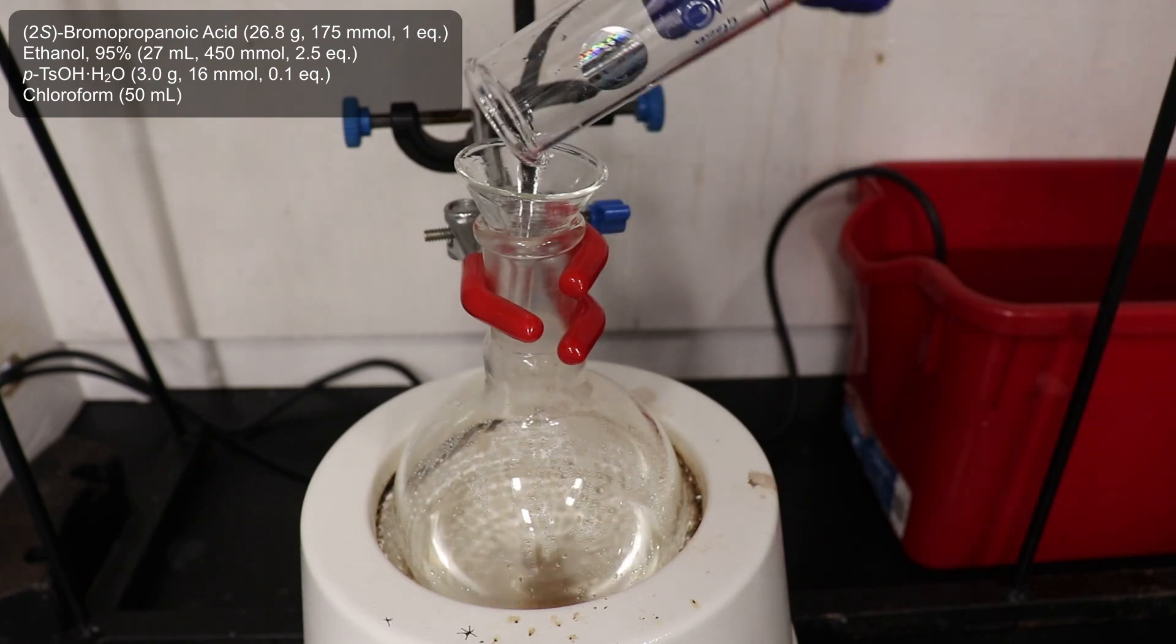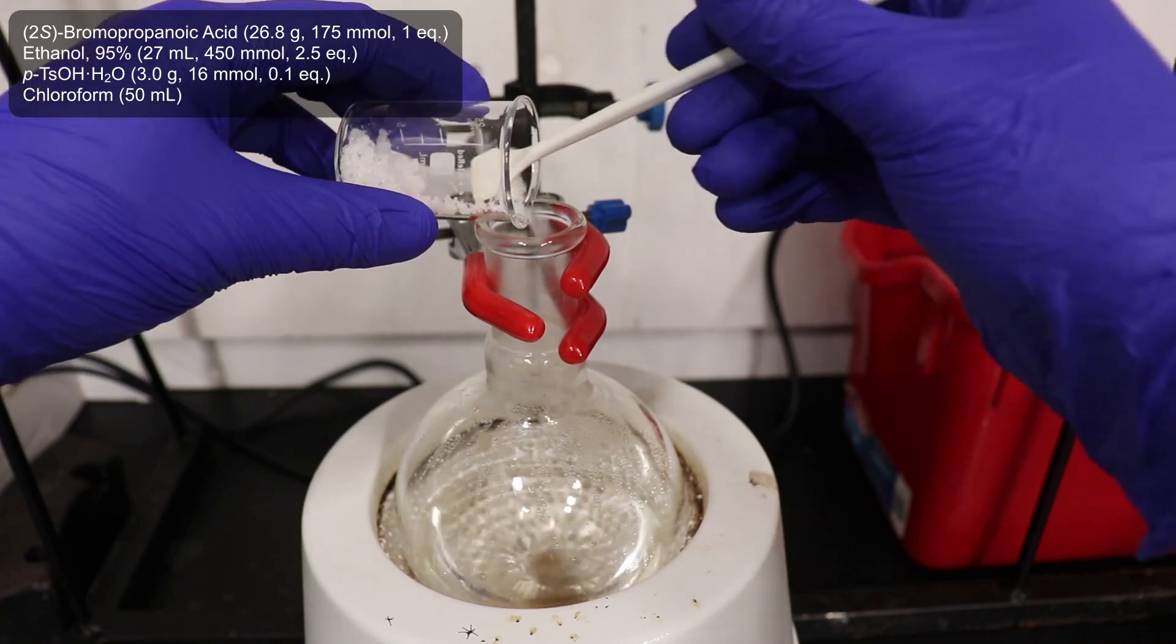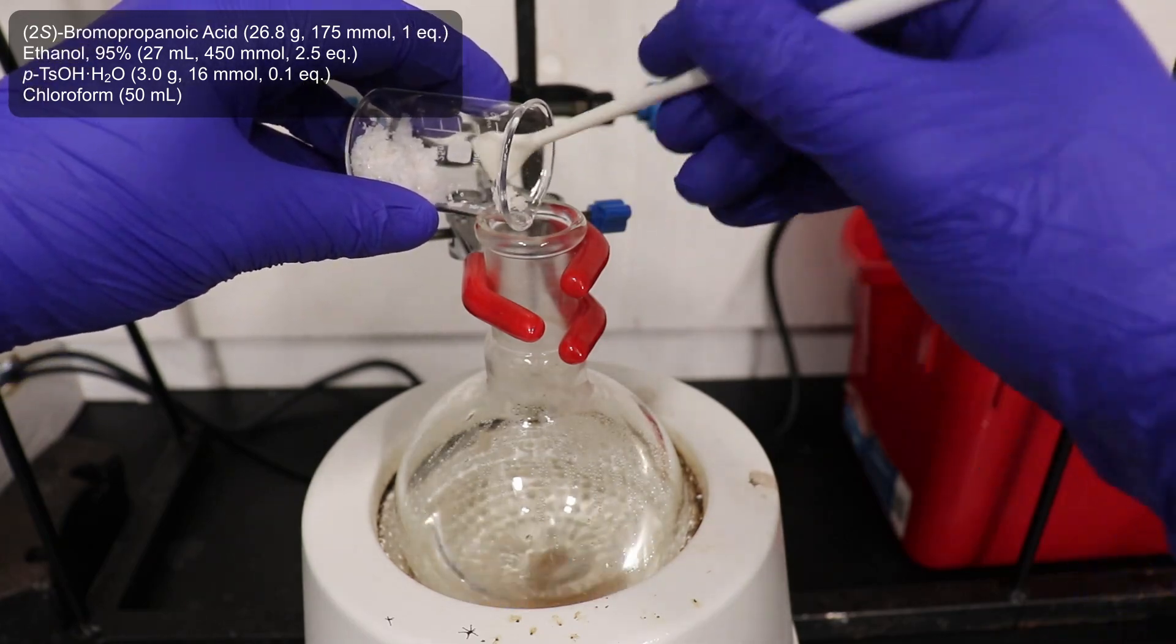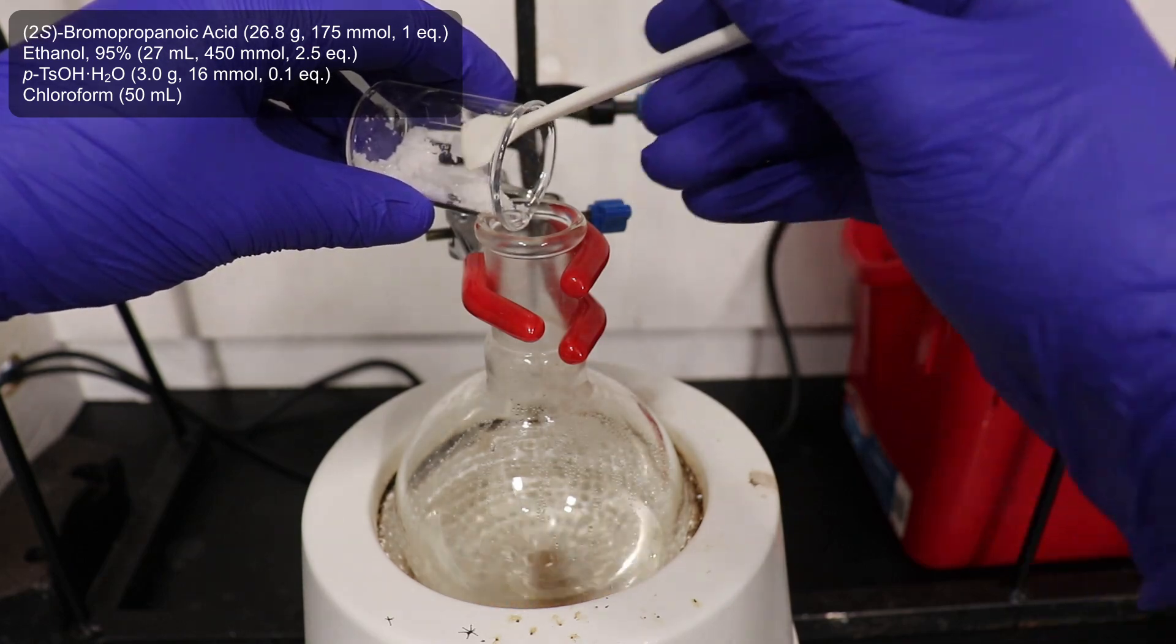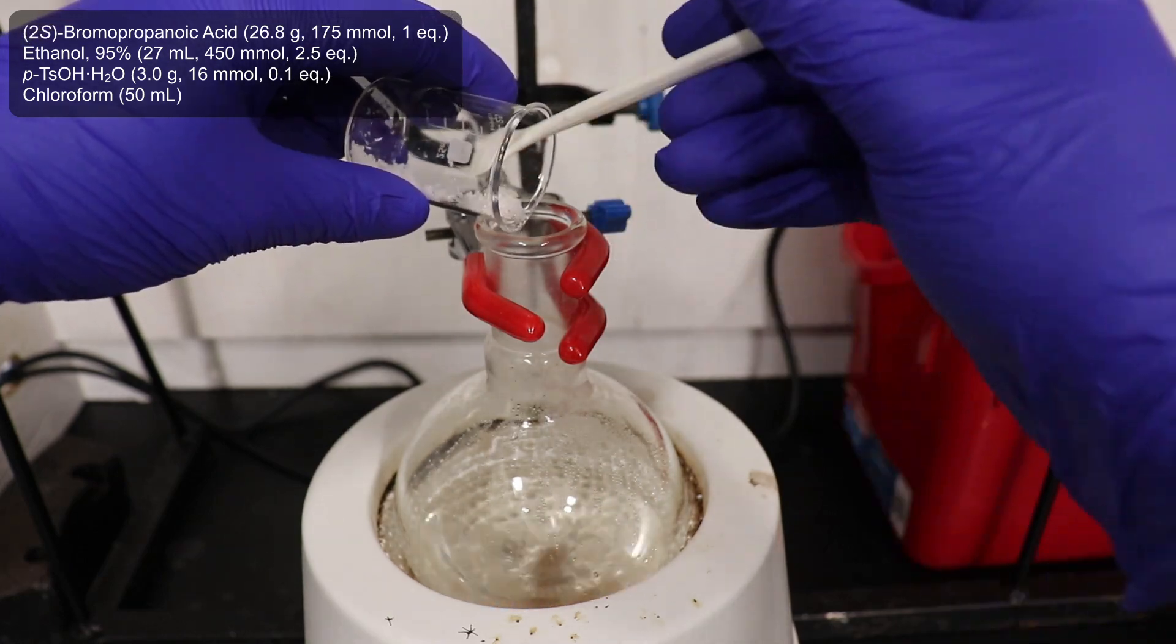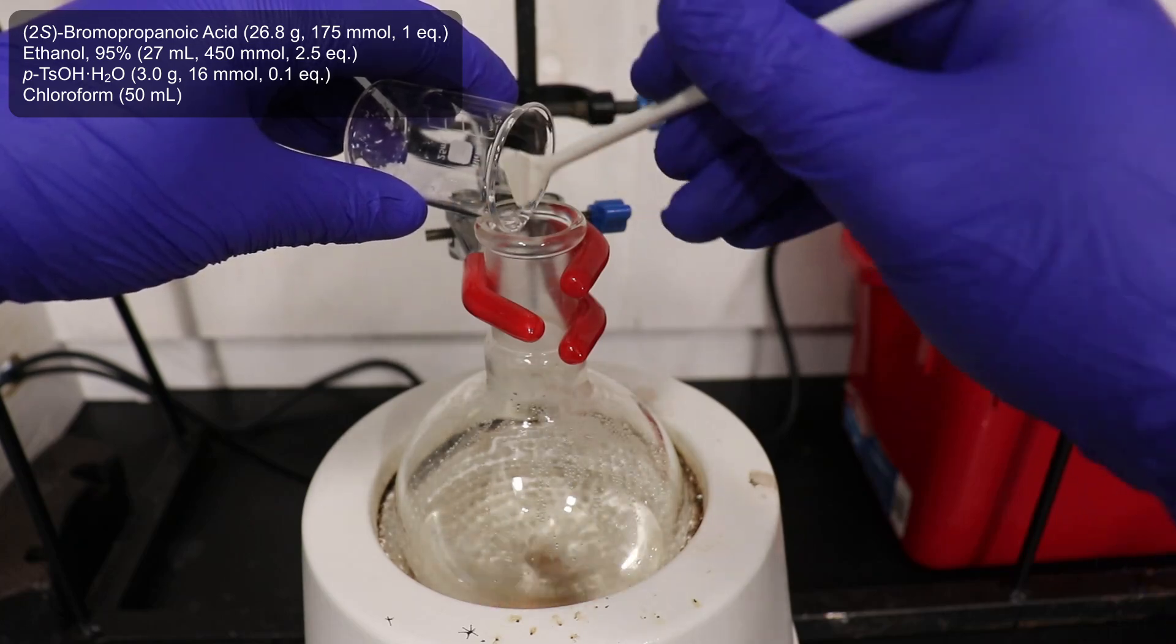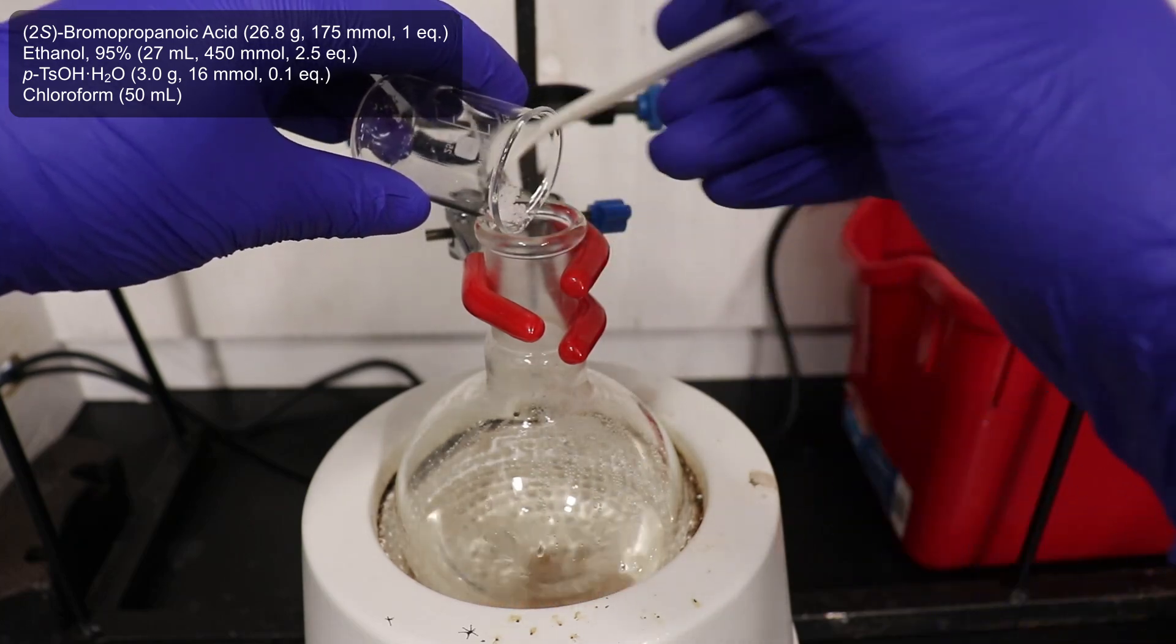27 mL of 95% ethanol, and 3 grams of para-toluenesulfonic acid monohydrate as our strong acid catalyst, which I had prepared myself 5 years earlier by the sulfonation of toluene.